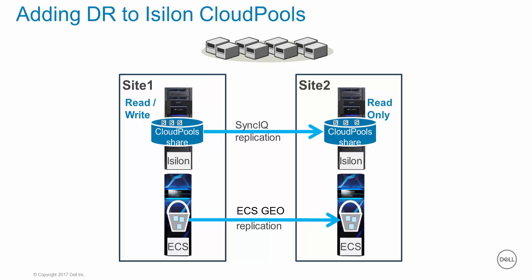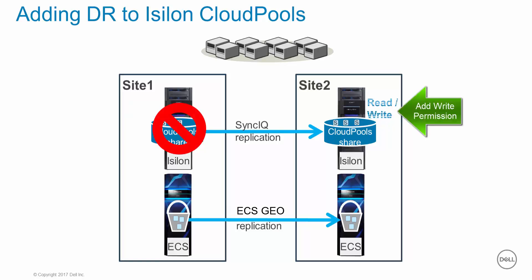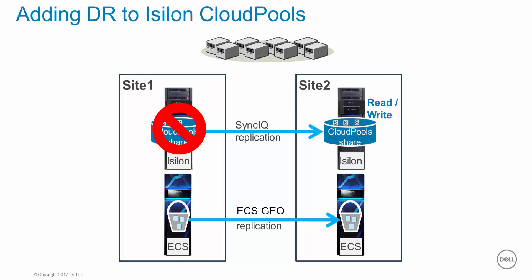In the event the source Isilon site has an outage, failover operations can be run by transferring write permission to the target site and redirecting users and applications to the secondary cluster, where they can continue to access, view, and modify their data. Now that we have discussed how it works, let's look at a live system to see it for ourselves.